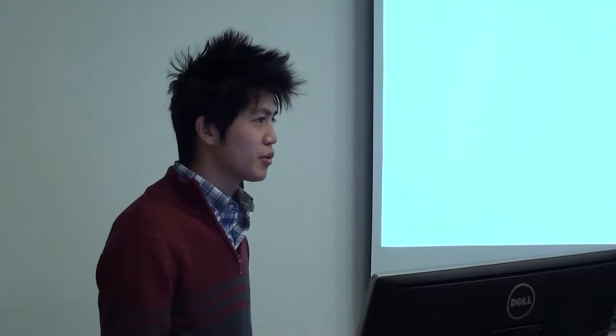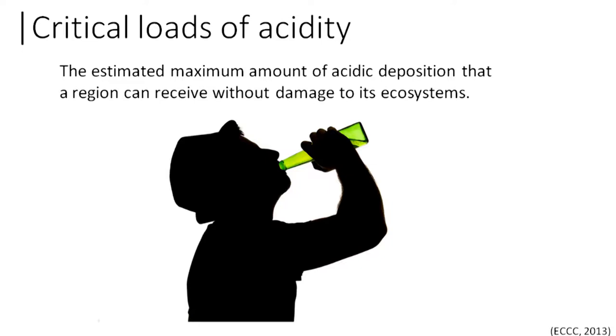So back to critical loads. Critical loads is the estimated maximum amount of acid deposition that a region can receive without damage — basically a threshold amount. A good example is drinking: everybody has a certain threshold in terms of alcohol consumption. I'm a small guy, I can't handle my liquor, while some other people can. So ecosystems with larger critical loads can handle more acid deposition than ecosystems with lower critical loads.